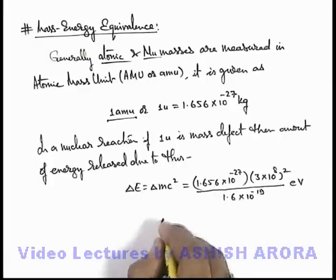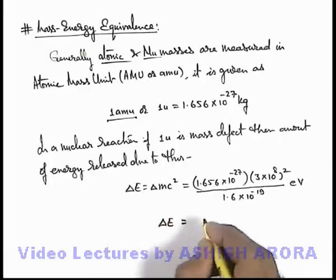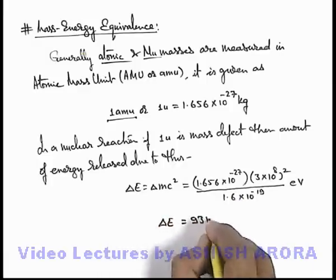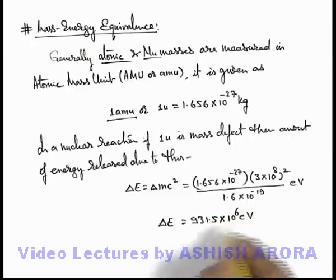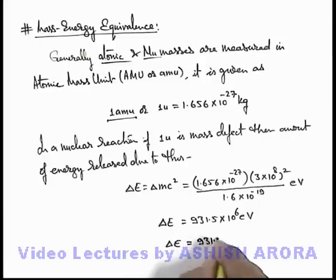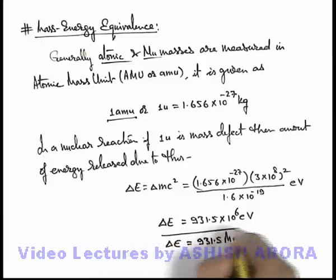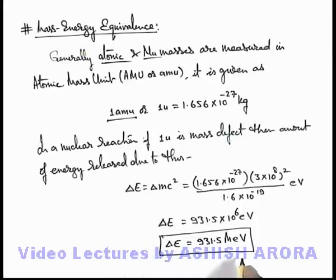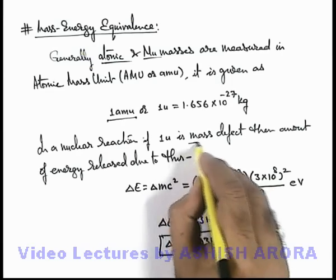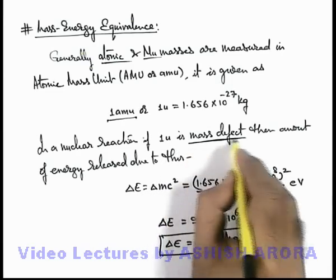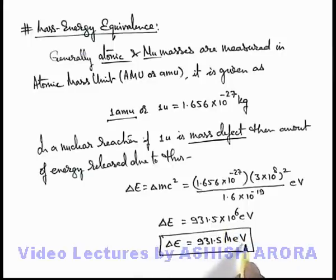When we calculate, the value of ΔE comes out to be 931.5 × 10⁶ electron volts, or 931.5 million electron volts (MeV). This is a very useful and important conversion factor we are going to use frequently in various reactions. Wherever we know the mass defect in atomic mass units, we can directly multiply it by 931.5 MeV to get the total amount of energy released in the nuclear reaction.